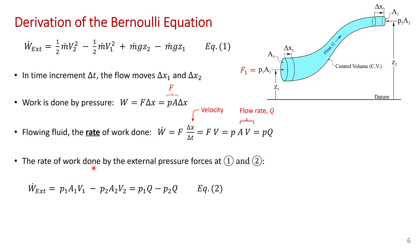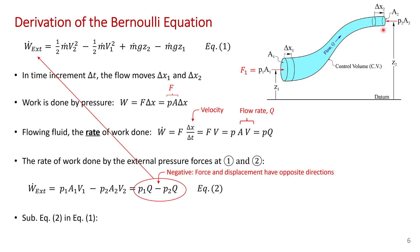Now we can express the rate of work done by the external pressure forces at one and two. It's the pressure at one times the flow rate minus the pressure at two times the volume flow rate. The first term is positive because the pressure force and displacement are in the same direction — that's work done on the control volume — whereas the second term is negative because at the exit the pressure force and displacement are in opposite directions, so the pressure force at the outlet is actually removing energy from the control volume. Now we substitute this expression for external work back into equation one.